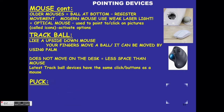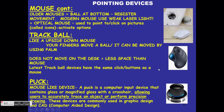A puck is another pointing device and still forms part of input. It is a mouse-like device that contains magnified glass with a crosshair, allowing the user to accurately trace objects. It is mostly used in computer-aided design (CAD) where you want to trace an object precisely.